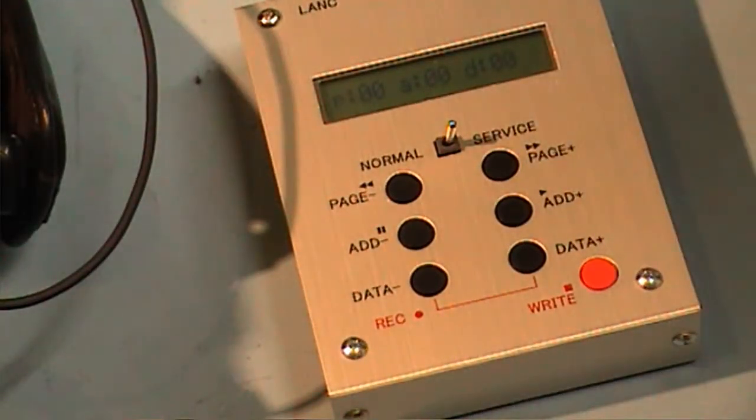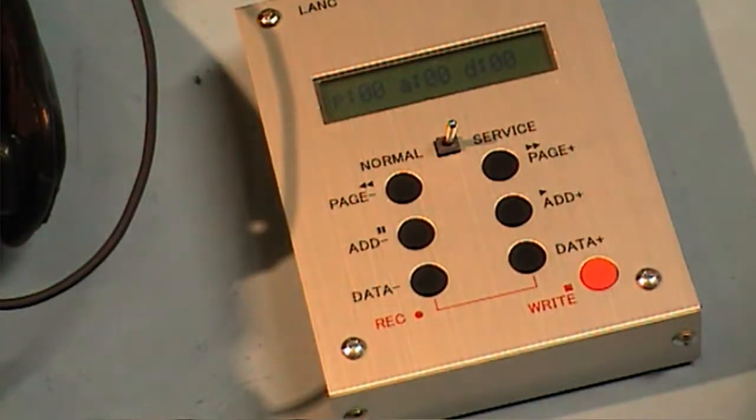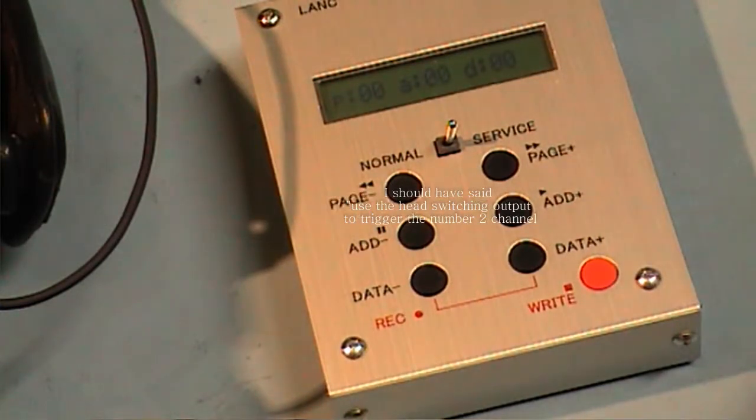We have the output of the heads going to channel 1 of my scope, and the head switching is going to channel 2. I'm going to use the head switching to synchronize my head so I can adjust the heads.